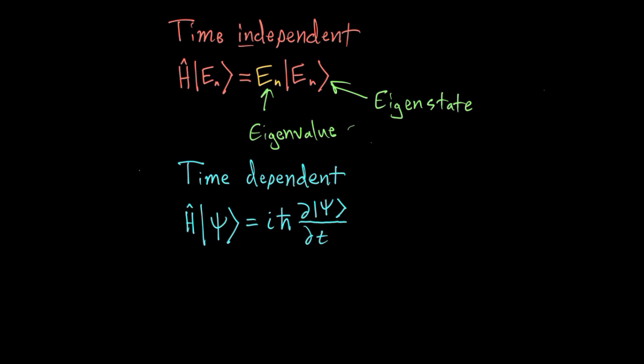And now let's talk about the time-dependent equation. So unlike the independent equation that has eigenstates in it, the time-dependent Schrödinger equation, I wrote a psi instead of an E with a subscript here to show that this really applies to any old state. It doesn't have to be an eigenstate. It can be an eigenstate, but it doesn't have to be.